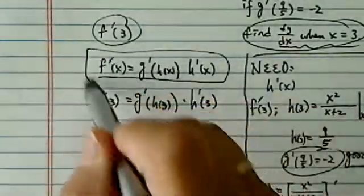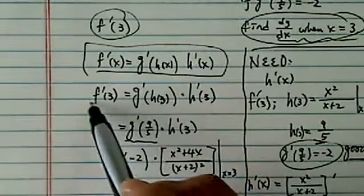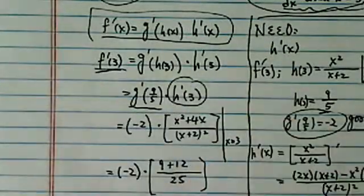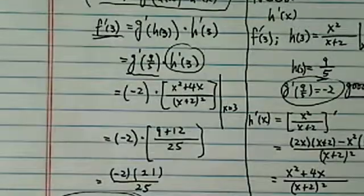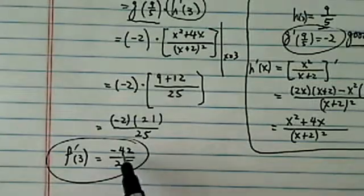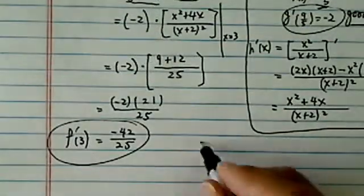f prime, I'm going to use a chain rule here, and then they're looking for a very specific value. So I plugged everything in, and since I already found h prime, I'm just evaluating at x equals 3. And in the end I simplified, and it was minus 42 over 25. Hope this helps.